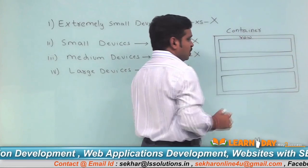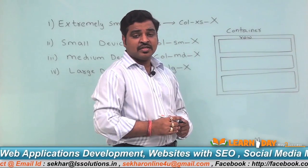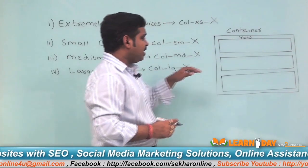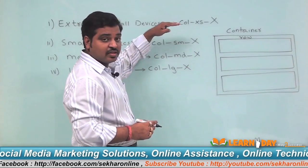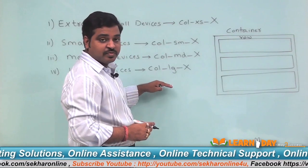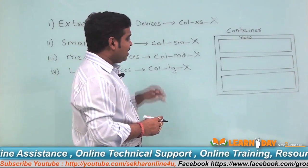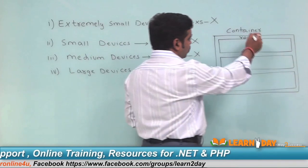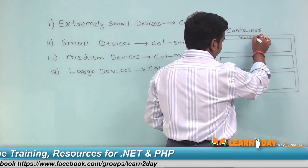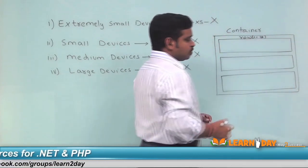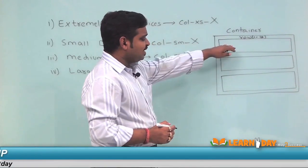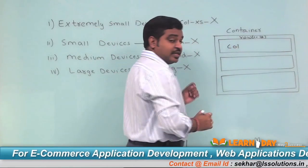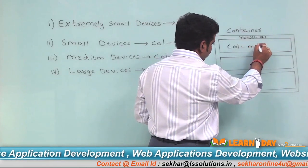Each row consists of columns. Depending upon your requirement, we select columns as per the device specification. The column size will be between 1 to 12. For example, to target desktop devices you can say col-md-12, which means the entire row will be one single column.